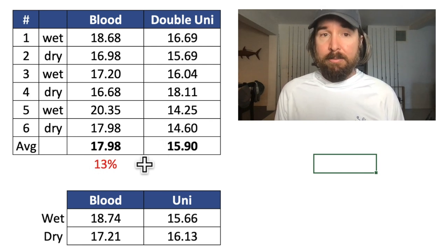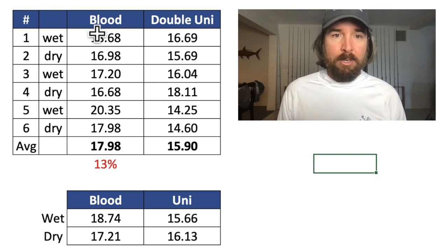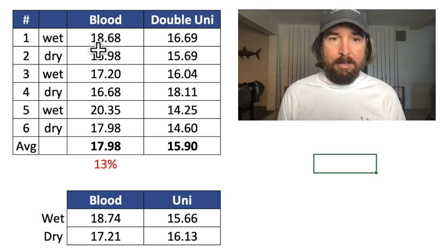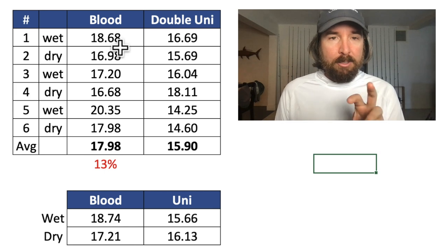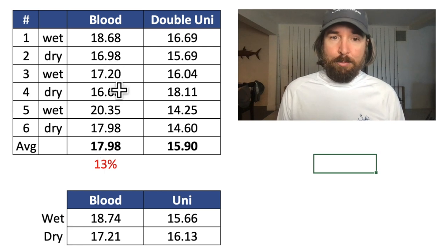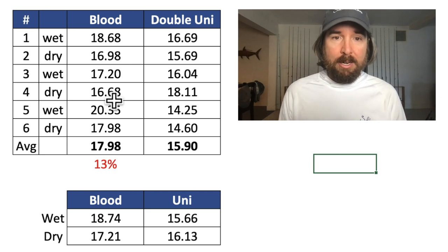Pretty impressive, right? I've always been a double uni fan and still am - it's still a great knot. But for these lines, for connecting two monos or even two fluoros that are so similar, as long as the diameters are relatively close, it's easy to tie and proven to be stronger. I'll do a follow-up test on the blood knot with a braid to mono connection to see how that compares.